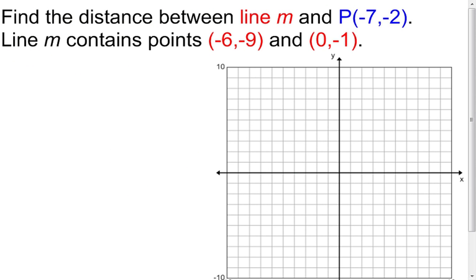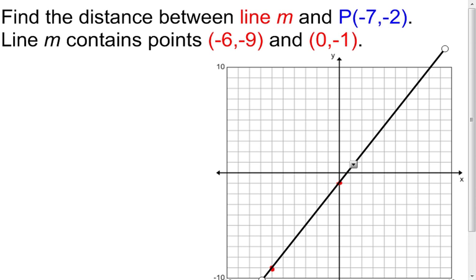Now let's get into something new. We're trying to find the distance between line M and point P. It tells me two points on my line: negative 6, negative 9 is on my line, and 0, negative 1 is on my line. I'm going to plot those two points and make my line go through them, extending it out so I have more to work with. I also have to put in the point negative 7, negative 2 — that's point P.